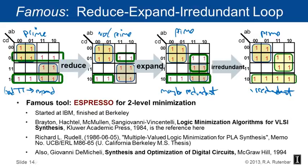This iterative improvement by reshaping is a really famous idea — perhaps the most famous idea in the two-level synthesis universe. The famous tool implementing it is called ESPRESSO, which started at IBM and finished at Berkeley. Key references include the 1984 book by Brayton, Hachtel, McMullen, and Sangiovanni-Vincentelli, Rick Rudell's 1986 master's thesis from Berkeley, and Nandy De Michele's 1994 McGraw-Hill textbook.